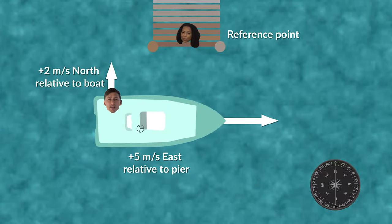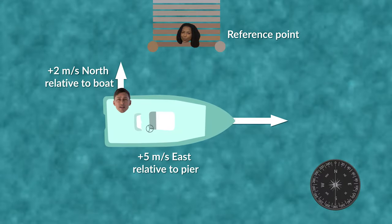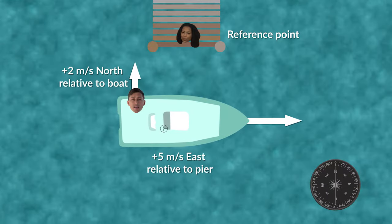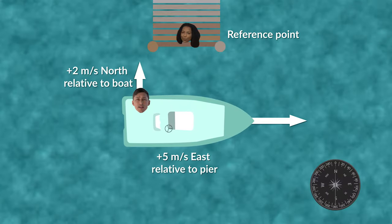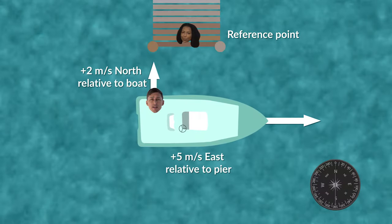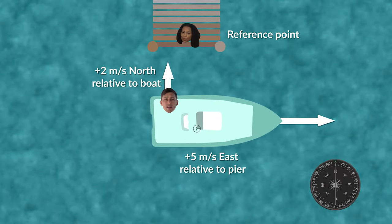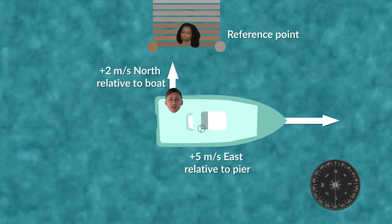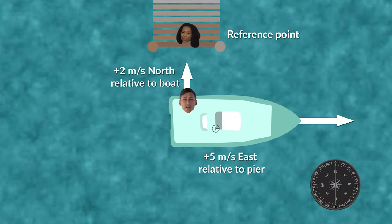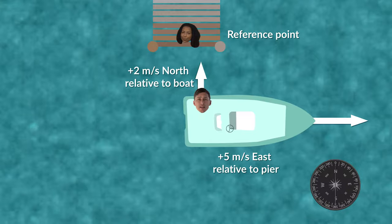From the perspective of anything on the boat, the boat is always still, and it's everything else that's moving. To know my velocity relative to the boat, the velocity of the boat doesn't matter. So from the frame of reference of the boat, my relative velocity is just 2 meters per second going north.